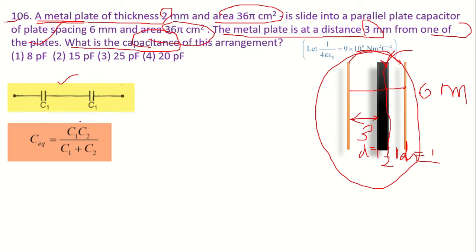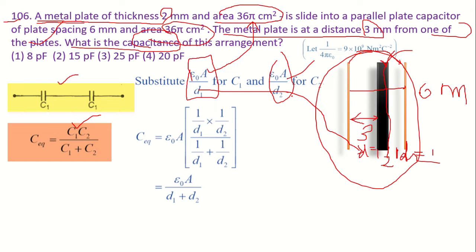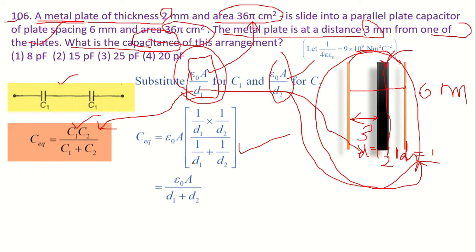Looking at the circuit diagram of this capacitor, the equivalent capacitance is given by C_eq = C1·C2 / (C1 + C2). We know that C1 = ε0·A / D1 and C2 = ε0·A / D2. If you substitute and simplify, D1 and D2 cancel out and the remaining term is ε0·A / (D1 + D2).